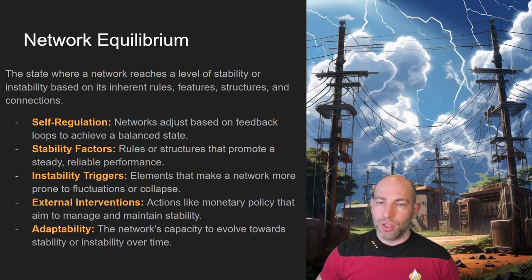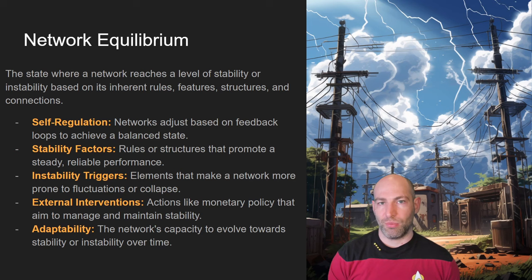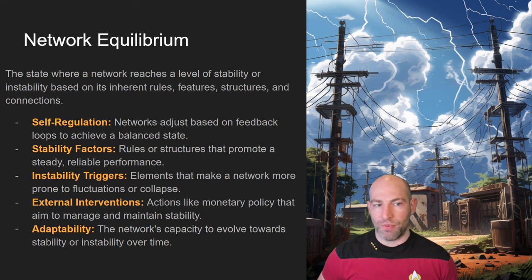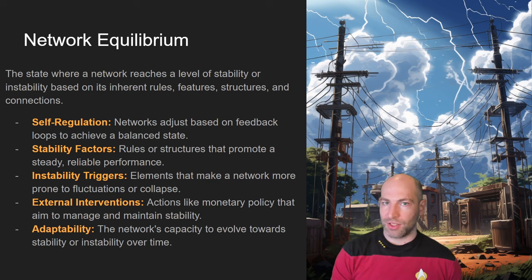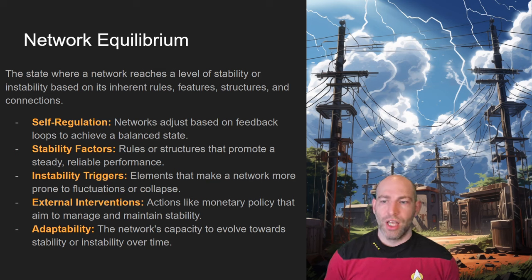Network equilibrium means a network will reach either stability or instability, and it will have some intrinsic structures and rules that lead it towards one or the other. Self-regulation — ways that networks can be self-stabilizing — might include cutoffs, breaks, or other kinds of friction that prevent things from spiraling out of control. In the seventies, eighties, and even nineties, there were cases of massive power grid failures because they were intrinsically unstable — if one major station failed, all the rest tried to take the load and there were no self-correction mechanisms to make it self-stabilizing.